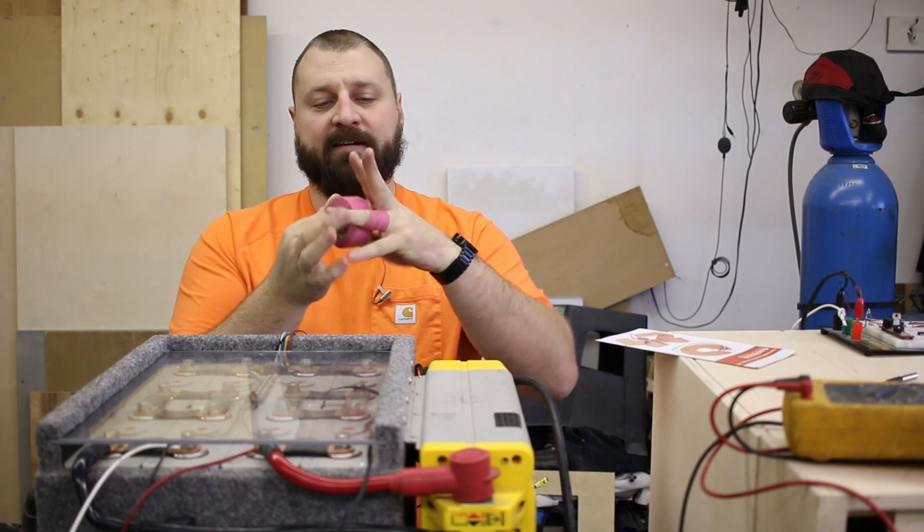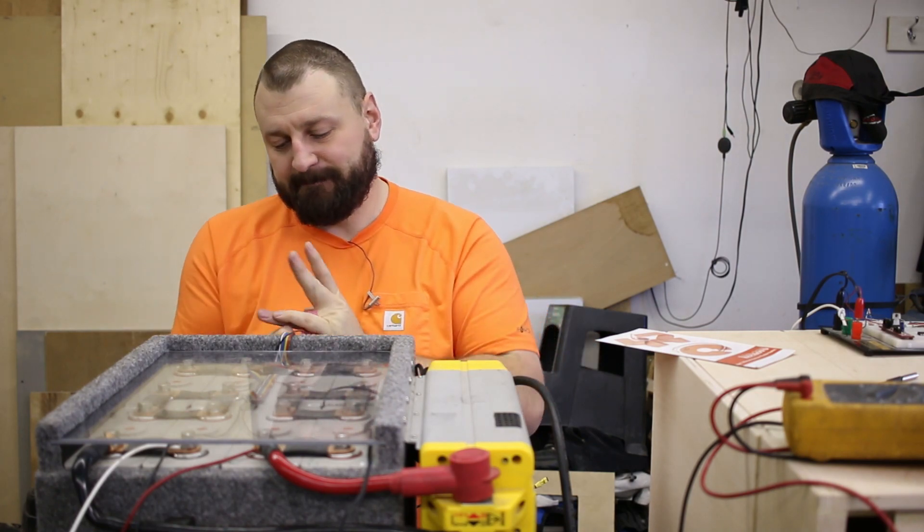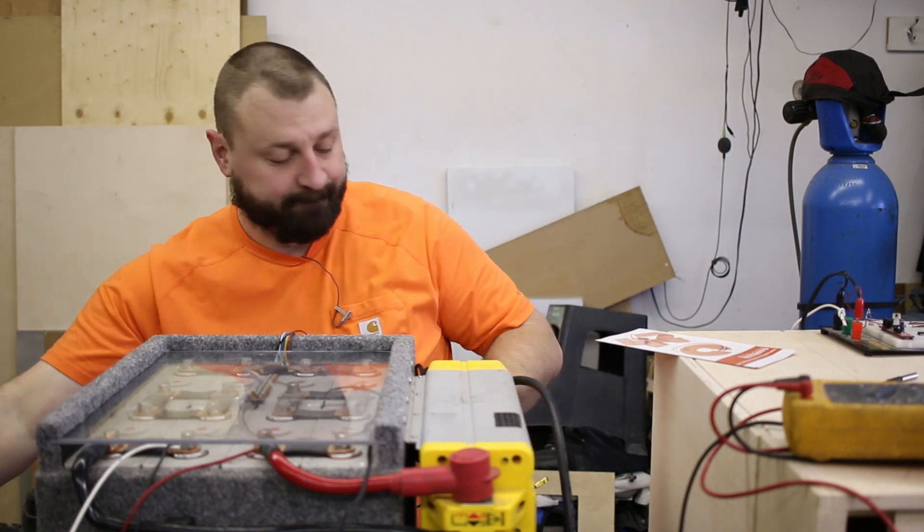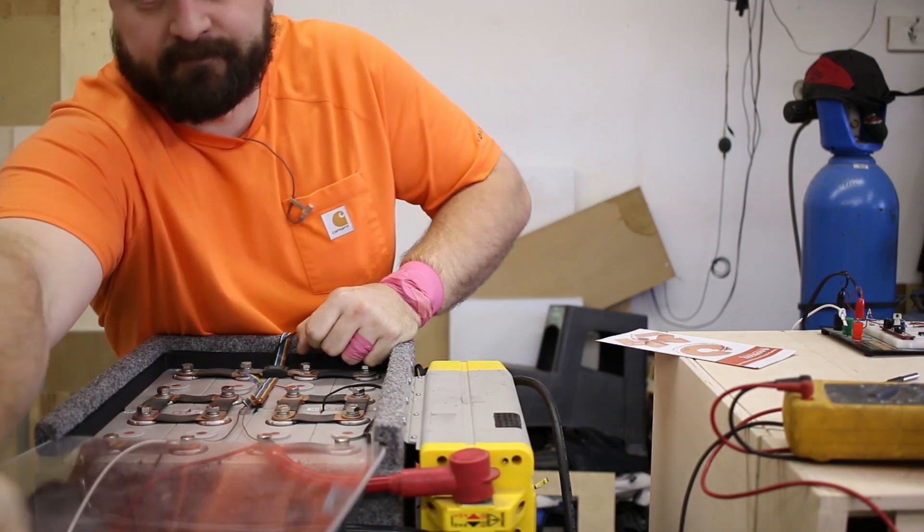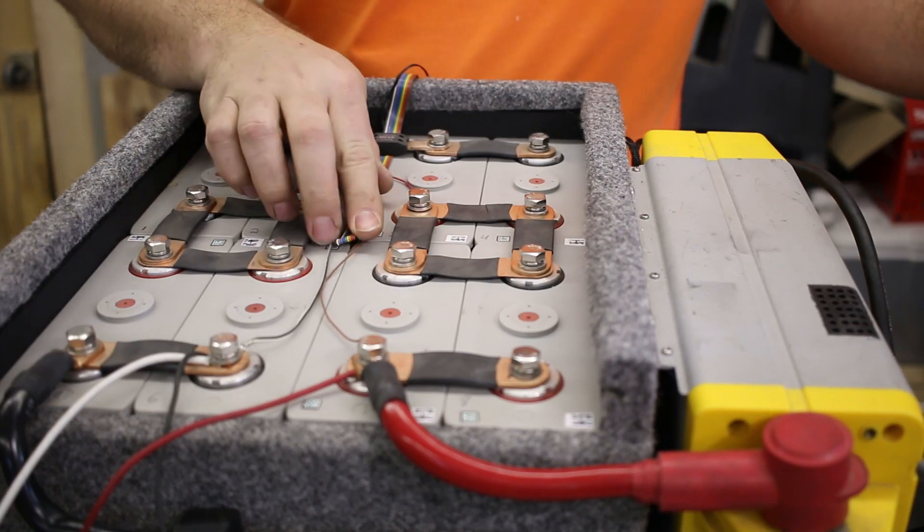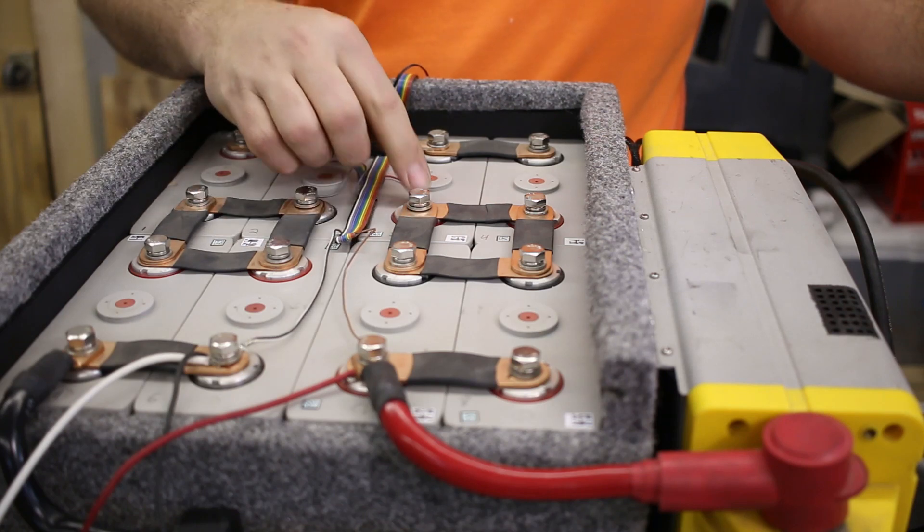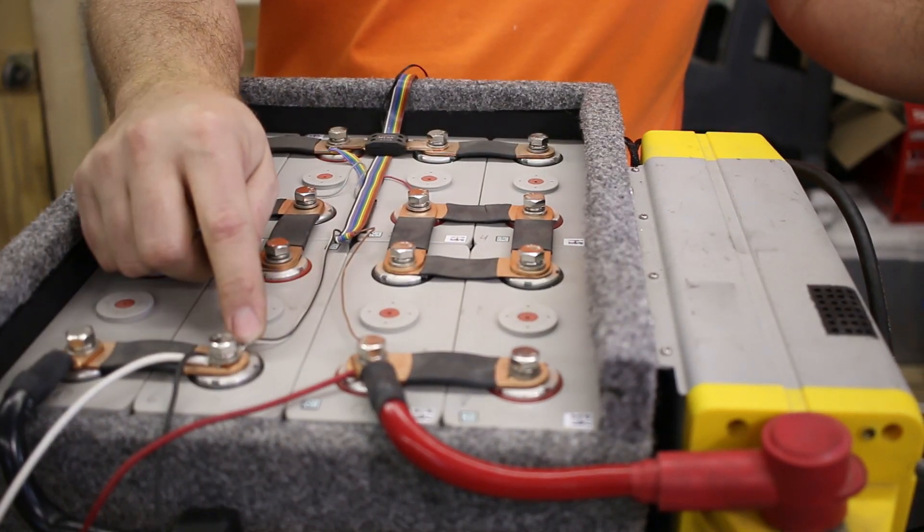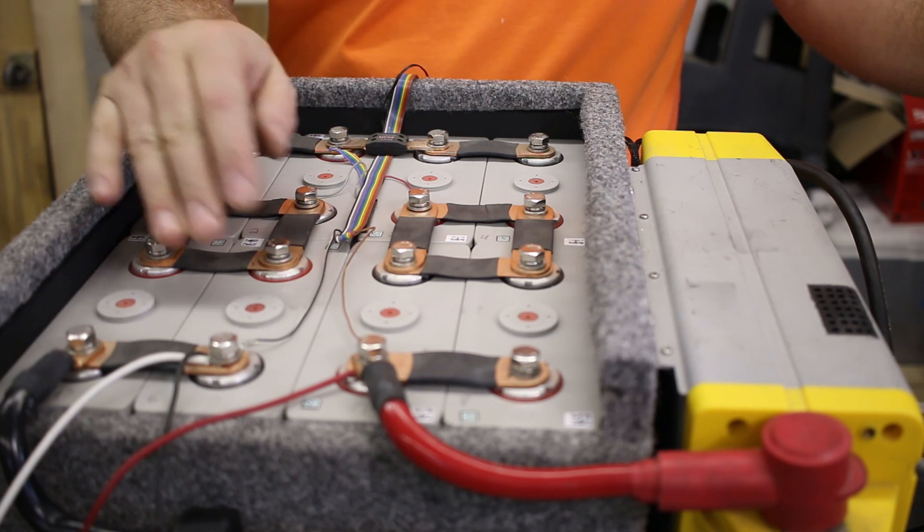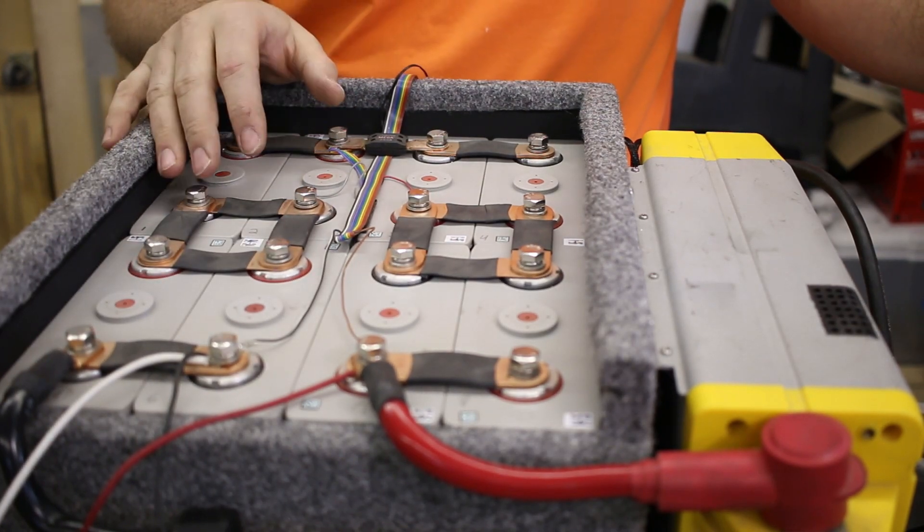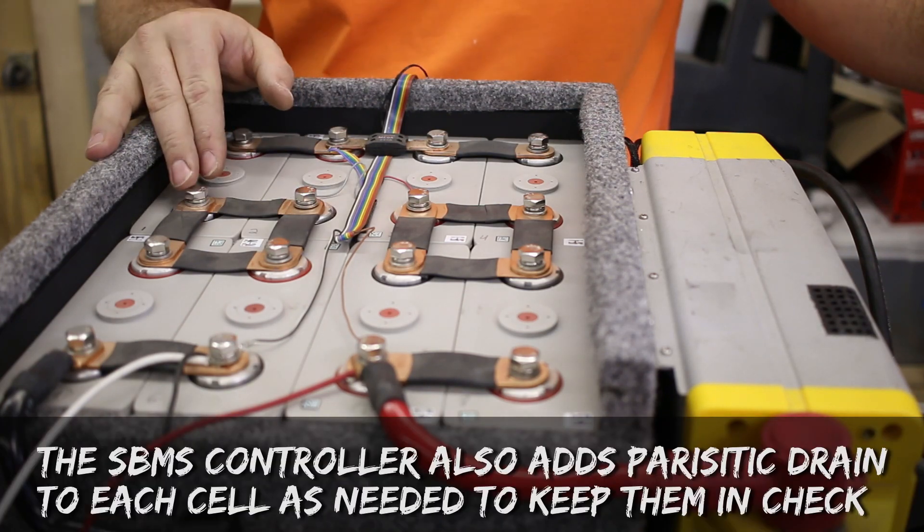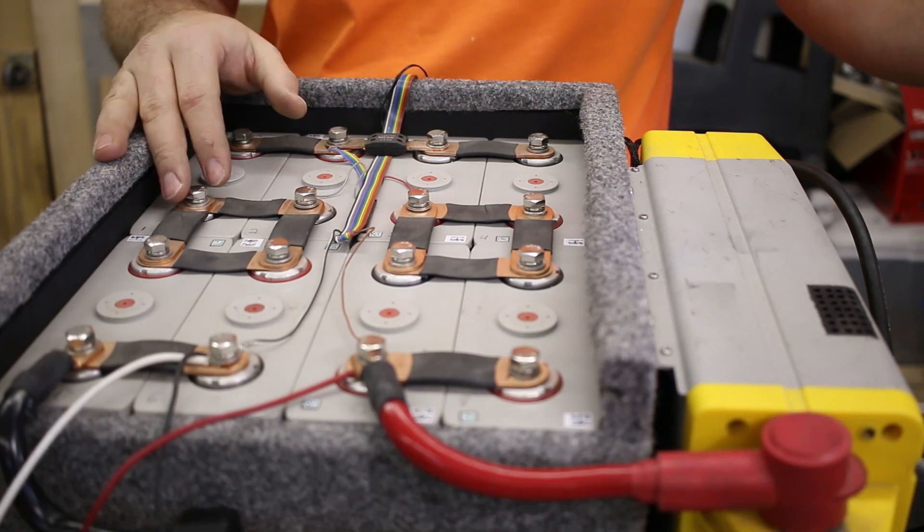Okay, so this is the pack opened up with the cover open. As you can see, the eight cells. This rainbow colored ribbon cable has a tap for each of the cells to measure its individual voltage. That way if the battery monitoring system detects any of the cells are too low or too high, it will shut down charging and shut down the load on those cells. We'll just shut the whole thing down. So that's the end-all safety.